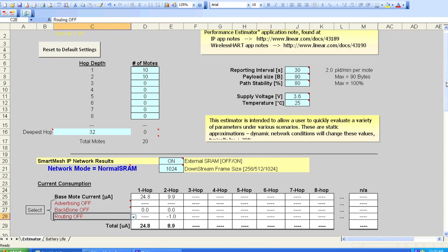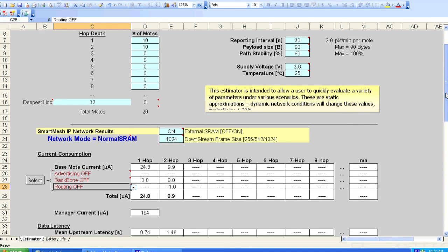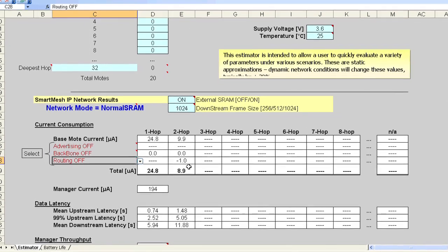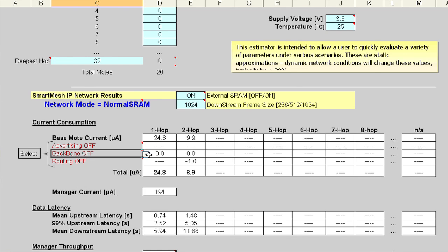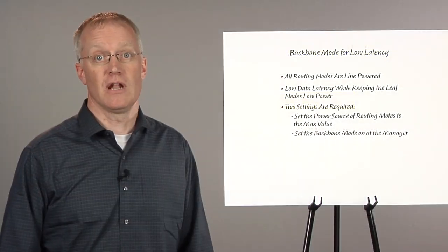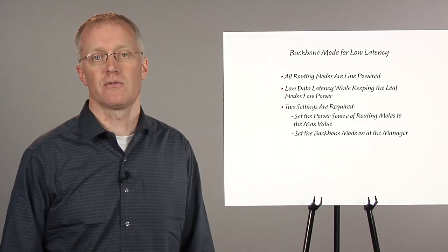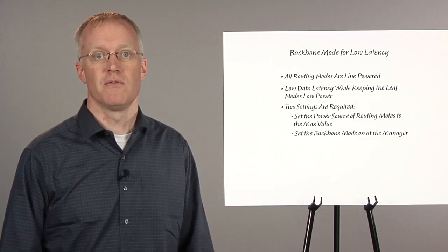Returning to our previous example, the data from these two hop leaf nodes will take about 1.5 seconds on average for delivery. But if you run the same network with the backbone on with size equal to one slot, there will be a significant reduction in data latency. Now the data reports from these leaf nodes takes 50 milliseconds on average to deliver, but leaf node power consumption remains at 9 microamps, and the routers now consume over 900 microamps. Such a configuration allows a customer application to take advantage of powered nodes to deliver very low latency and extremely long battery life for the leaf node sensors.